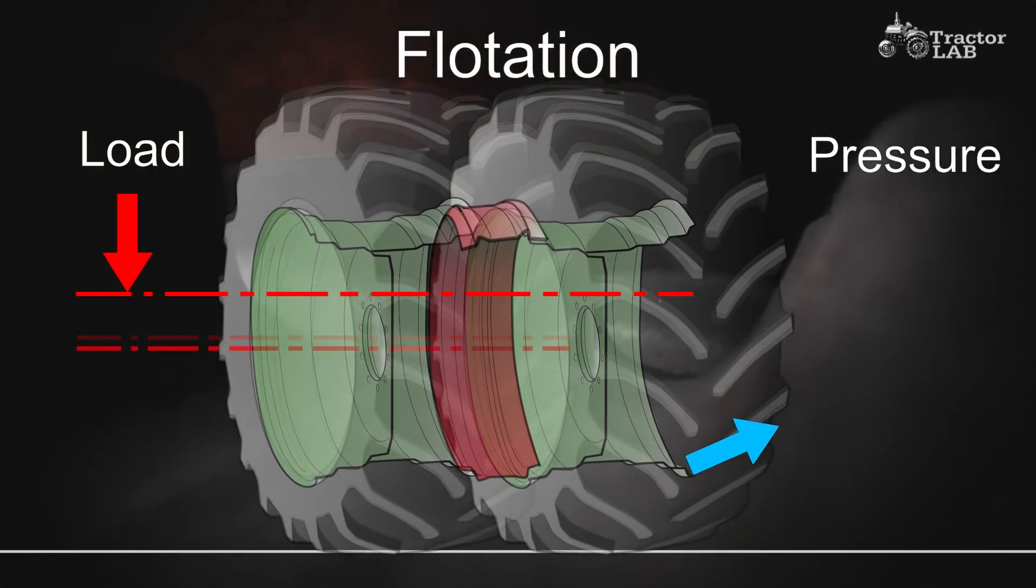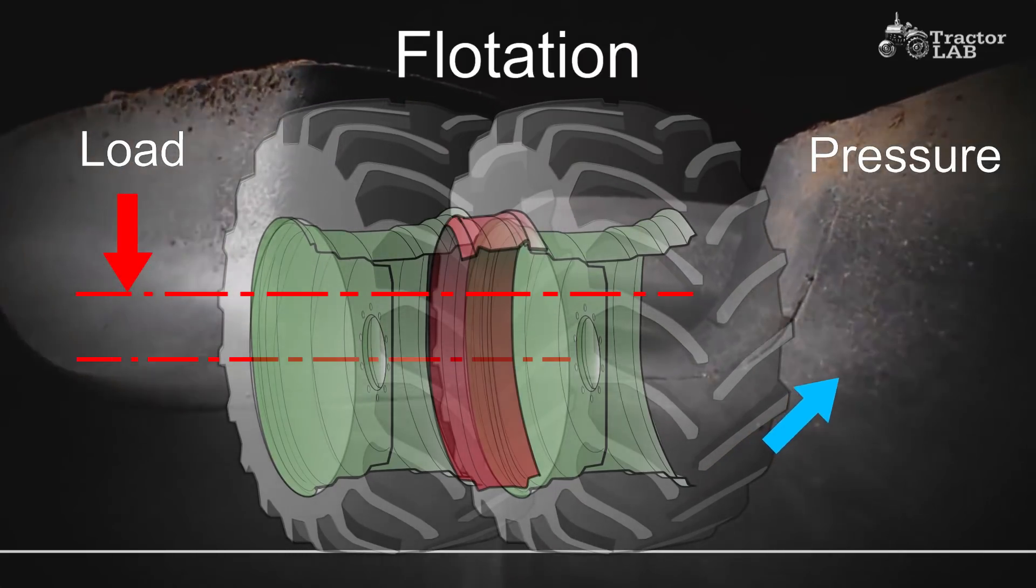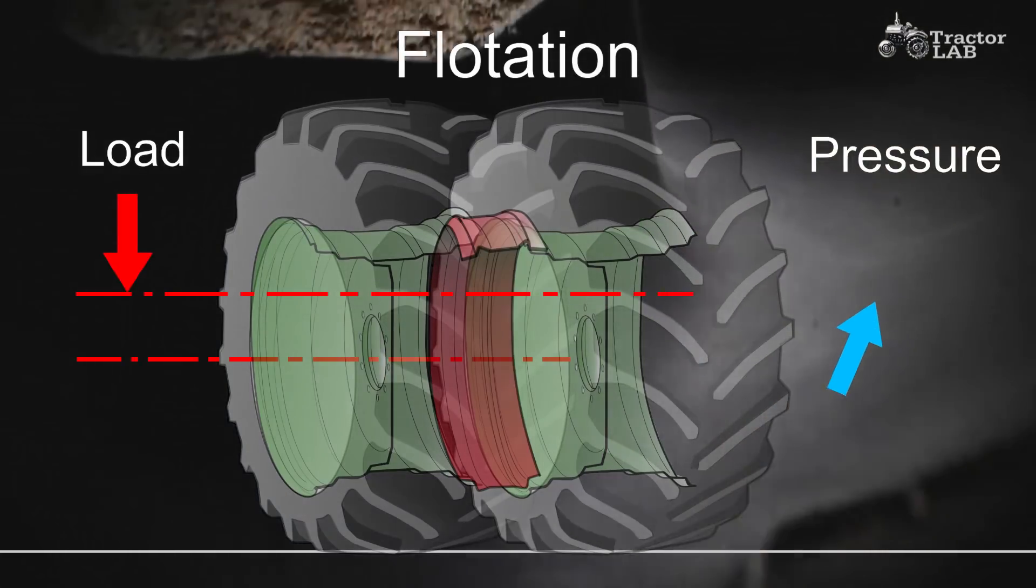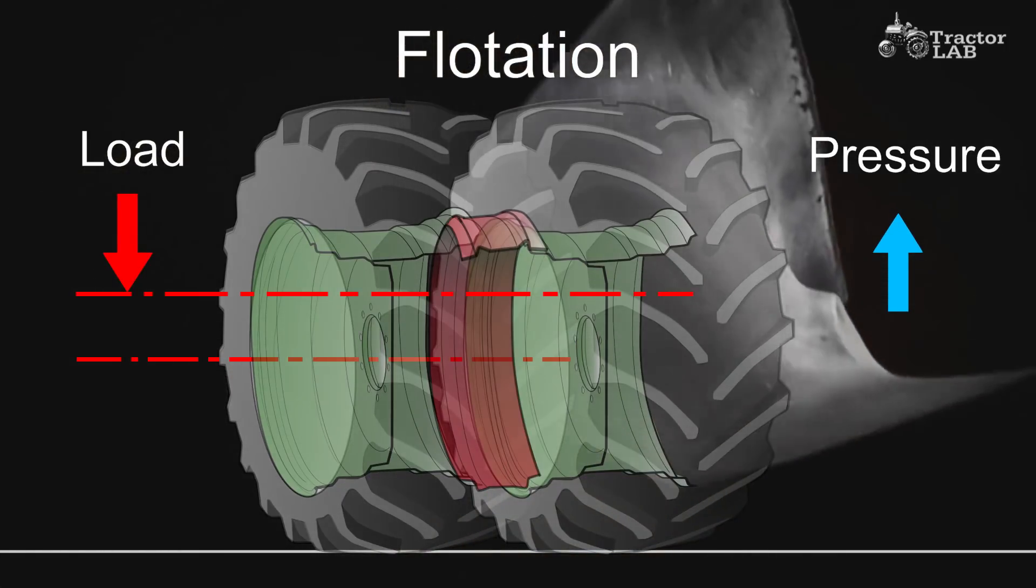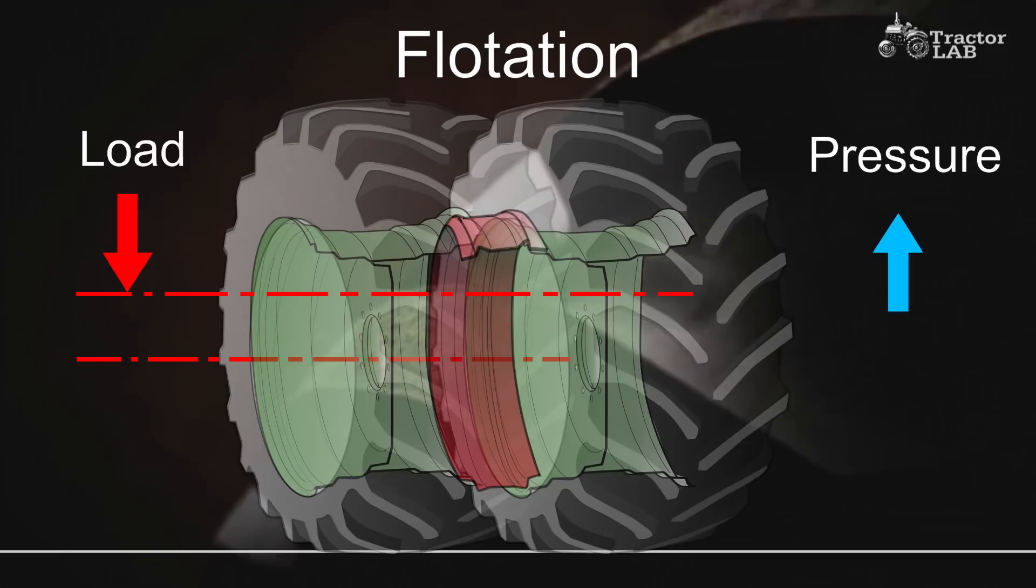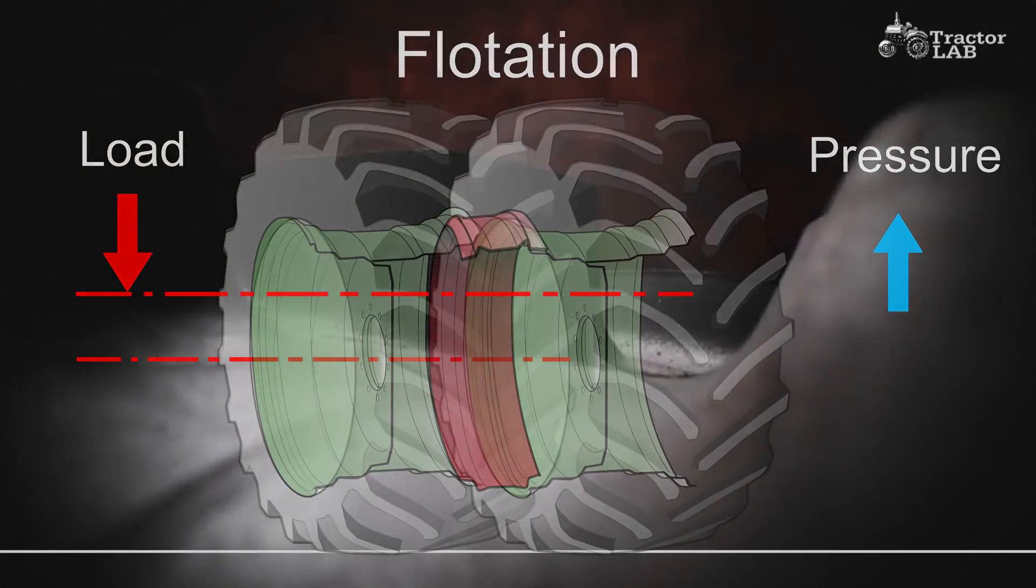If you want flotation from your duals or triples, run your tractor at the manufacturer's minimum weight and HP ballasting recommendations and decrease inflation pressure to match the lighter load according to the load and inflation tables. Compared to single tires, duals and triples can allow you to both increase traction, more weight, and improve flotation, lower inflation pressure, if only moderate increases in ballasting are made. However, remember that duals and triples increase your tractor's rolling resistance and decrease traction efficiency.